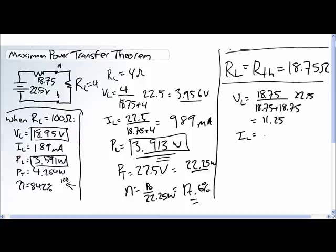I to the load, current to the load is equal to 18.75 plus 18.75 below the total applied voltage, 22.5. It makes your calculations pretty easy too. 22.5 divided by 22.75. This is 600 milliamps.